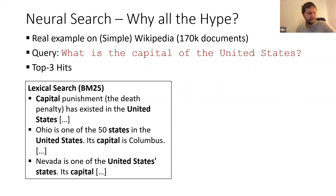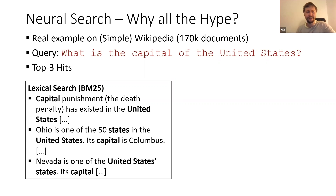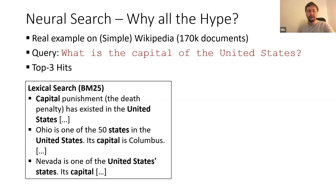Pretty much every search function — except maybe Google, Bing, and a really few others — is really disappointing. There's no search function I really like. If I want to find something on Twitter, I often go to Google and search there for the tweets I'm looking for, because the search function on Twitter works quite poorly.